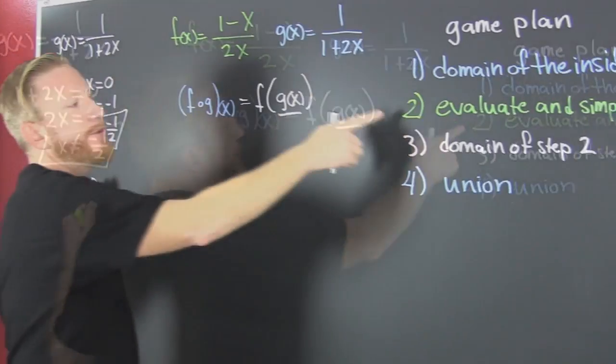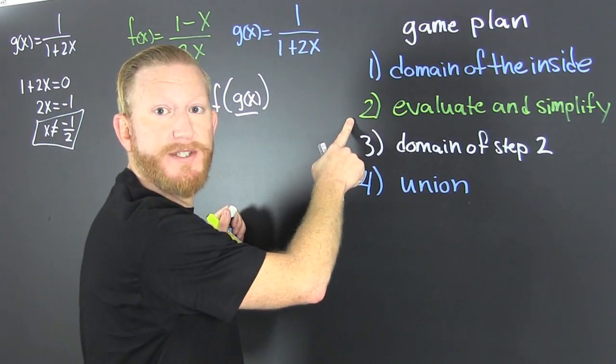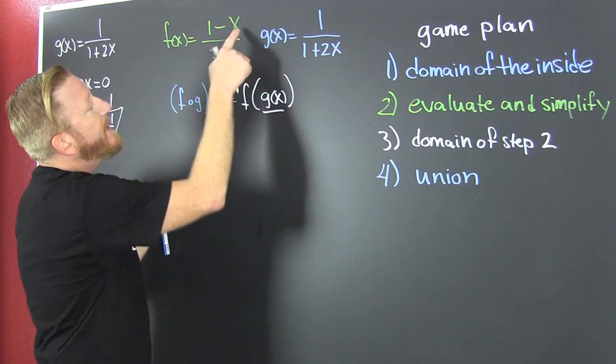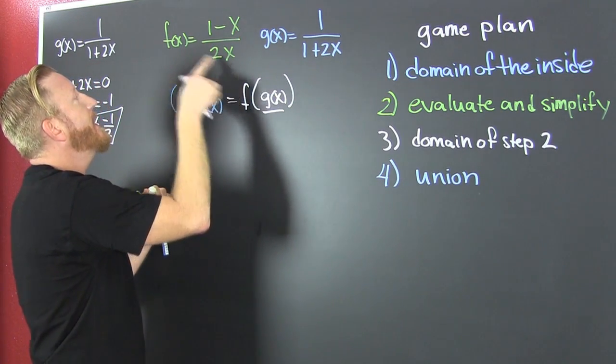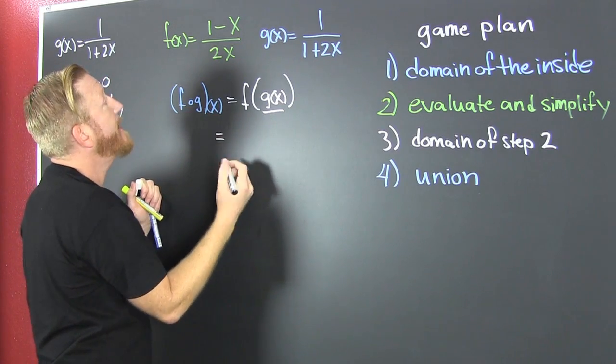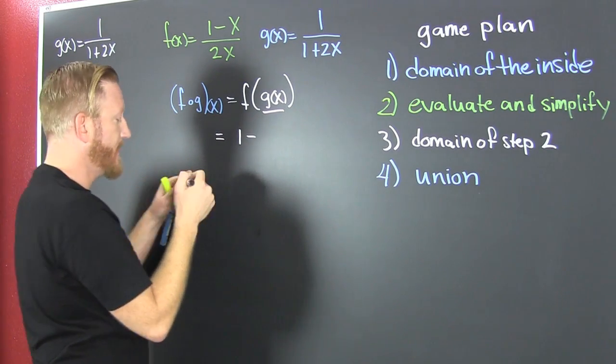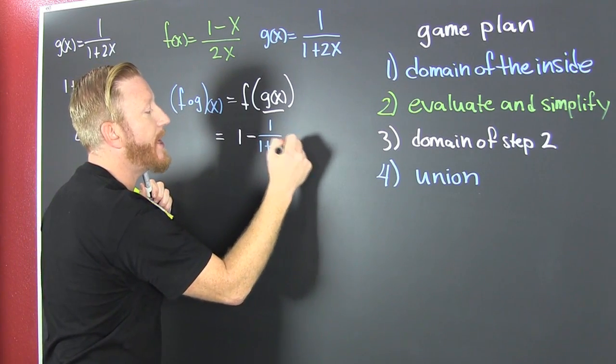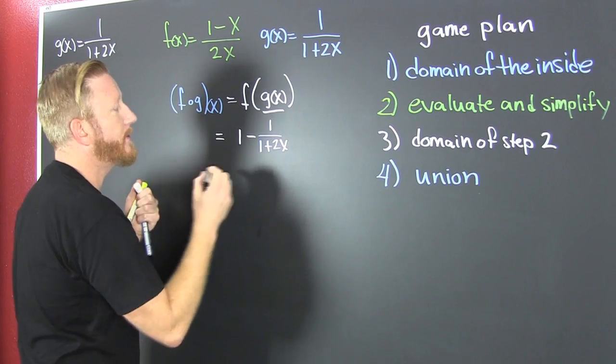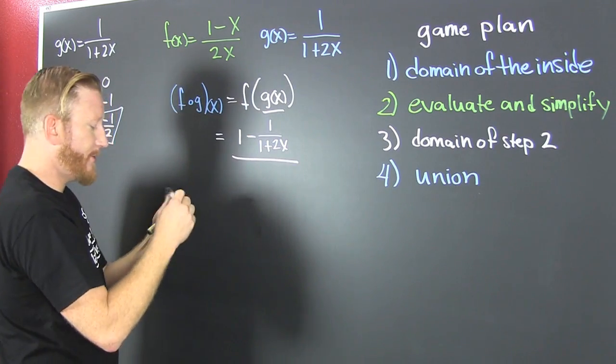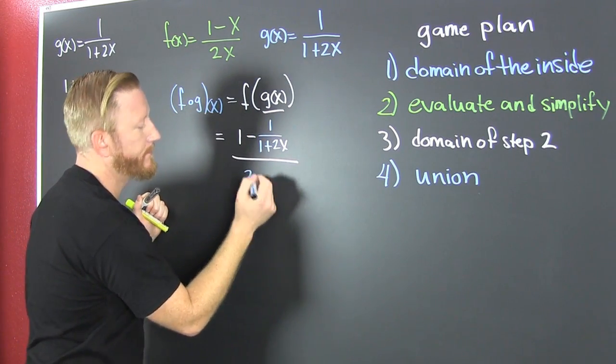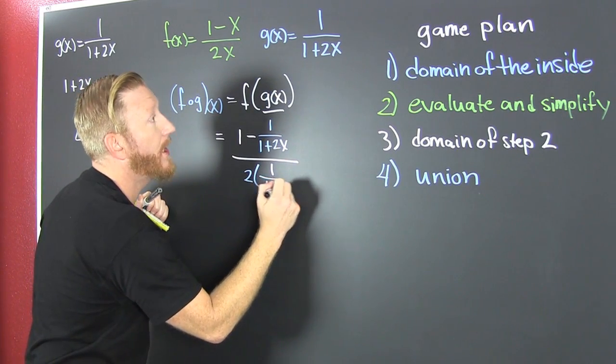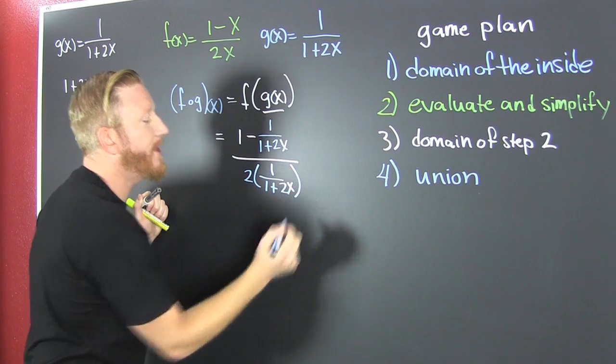And step two, we're going to evaluate the composition and simplify. So we're going to go and we're going to throw g of x into x everywhere we see it in f of x. And we do that now. That's 1 minus g of x is that blue one, 1 over 1 plus 2x, all over two times, well that should have been white, two times g of x, that's 1 over 1 plus 2x.